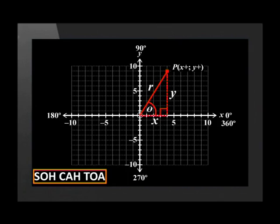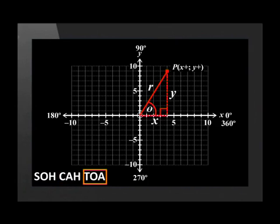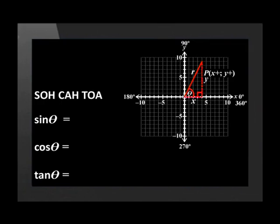These changes also affect whether the trig ratios will have positive or negative values. Remember that SOHCAHTOA helps us to remember that the trigonometric ratios: sin theta equals opposite over hypotenuse, cos theta equals adjacent over hypotenuse, and tan theta equals opposite over adjacent. Looking at this sketch, we can see that r is the hypotenuse, y is opposite and x is adjacent. This means that sin theta equals y over r, cos theta equals x over r, and tan theta equals y over x. Now let's see what happens to the ratios as the position of point P changes.